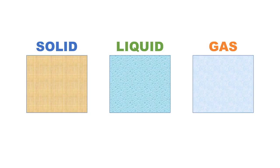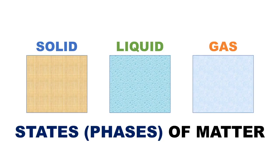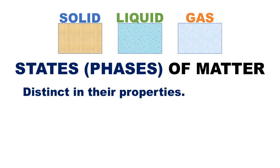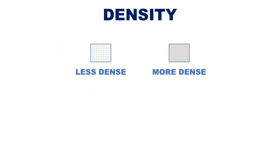Solids, liquids, and gases are all called states or phases of matter. They are distinct forms in which matter can exist. Distinct means they are notably different in their properties. One of those distinct properties is called density.